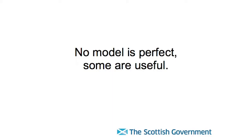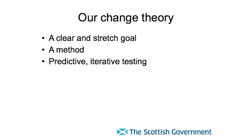No improvement model is perfect, but some are useful. The model that we use relies on three things: having a clear and stretch goal — to try and get people to think about transformational change for a significant improvement, rather than just a 1% or 2% improvement that makes people run faster — a method, which is the improvement model, and then using some predictive, iterative, small-scale testing in order to test our theories and ideas of what the changes could be.